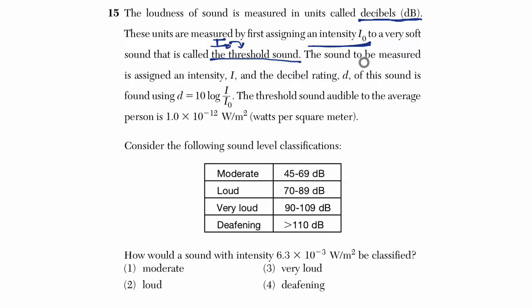OK, the sound to be measured is assigned an intensity i. So there's i sub zero as the threshold sound, and then i, which is the intensity of the sound we're looking at. And the decibel rating d. So decibels is measured by the variable d, and it's focused on this equation right here.